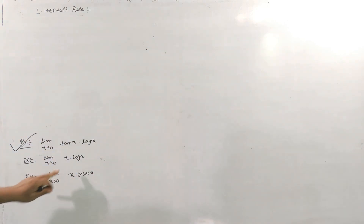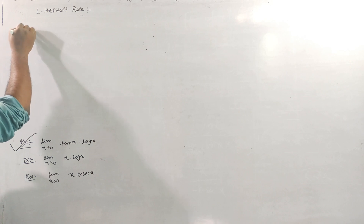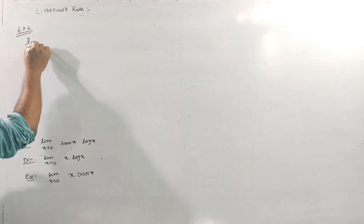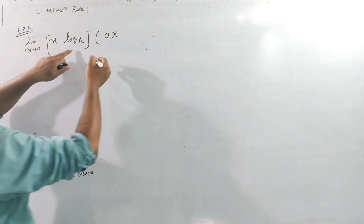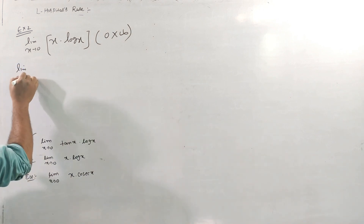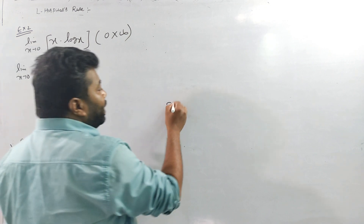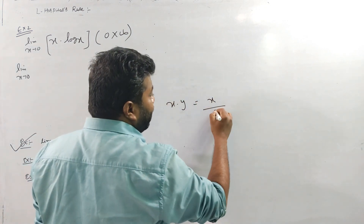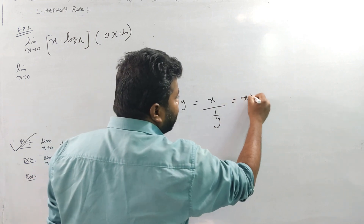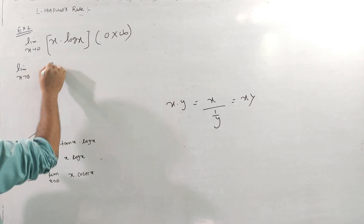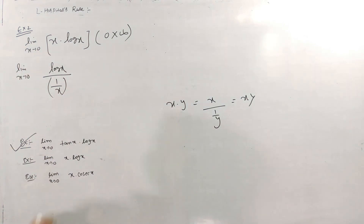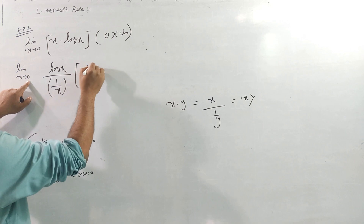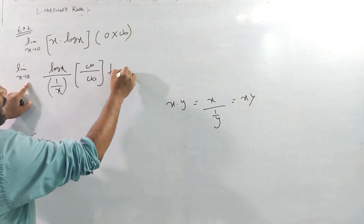Next question: limit as x tends to 0 of x·log(x). As x→0, this gives 0·(−∞), which is the 0×Infinite form. We rewrite it as log(x) divided by 1/x, where log(0) is −∞ and 1/0 is ∞, giving us the ∞/∞ form.